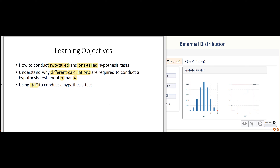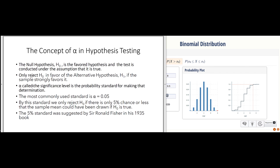We're going to make use of ILE along the way for this. The null hypothesis, which we call H0, is the favored or default hypothesis that we either believe or fear is probably true. We're going to reject this null hypothesis in favor of our alternative hypothesis H1 or HA if analysis of the sample strongly favors the alternative hypothesis.